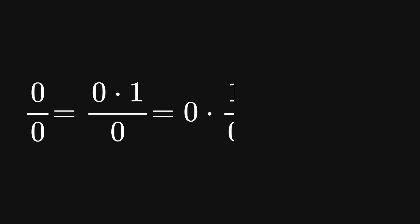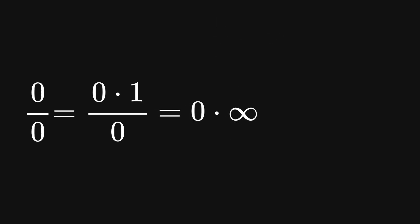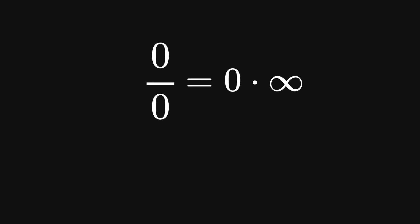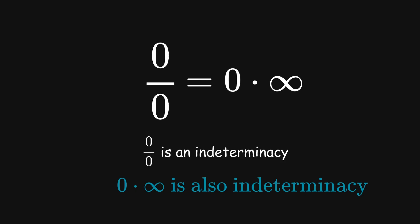Let's take another look at 0 over 0. We can rewrite the numerator 0 as 0 times 1, so 0 over 0 becomes 0 times 1, all over 0. Rearranging, we get 0 times the fraction 1 over 0. Since 1 over 0 equals infinity, our expression transforms into 0 times infinity. So through simple algebraic manipulation, we've shown that 0 divided by 0 equals 0 times infinity — and since 0 divided by 0 is an indeterminacy, 0 times infinity is also a mathematical indeterminacy.